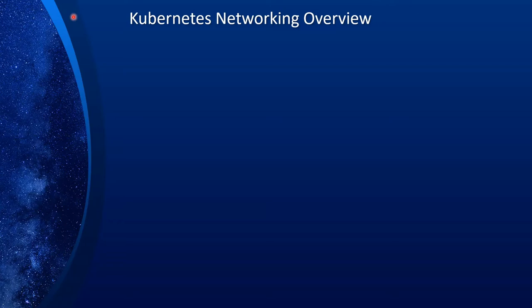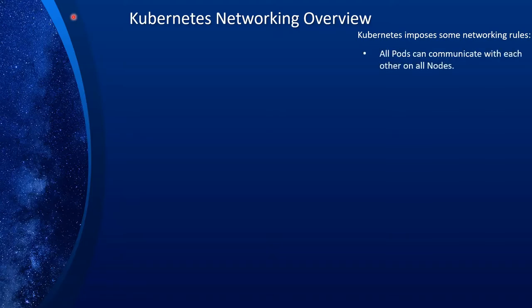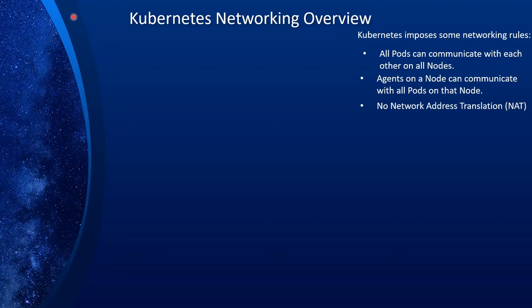Kubernetes imposes some networking rules. First, all pods can communicate with each other on all nodes. Second, agents on a node can communicate with all pods on that node — meaning all Kubernetes services on the node can communicate with all pods on that node. Third, no network address translation: each pod gets its own IP address, and that IP address is used to address that pod from other pods or services. The rationale for these rules is simplicity, hiding implementation details, and service discovery.